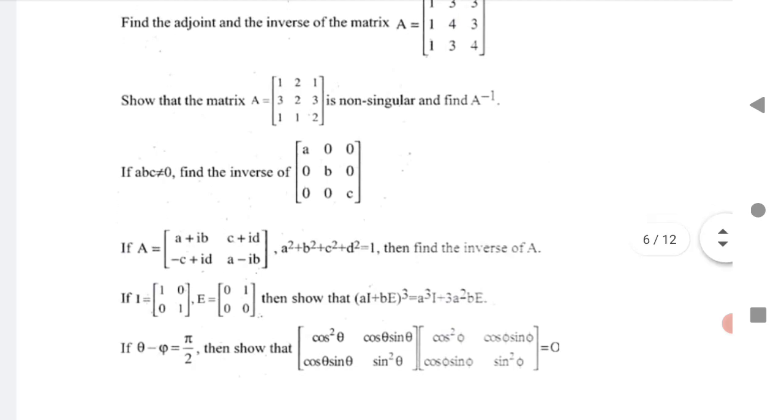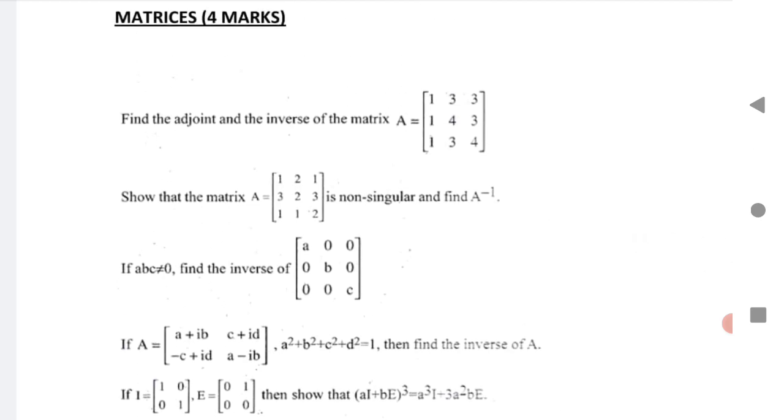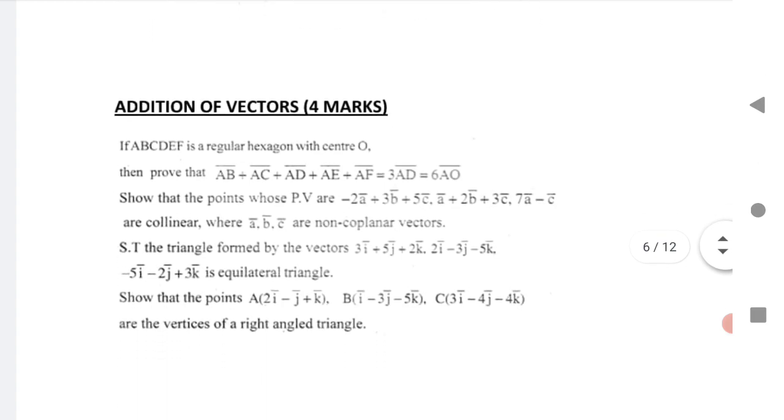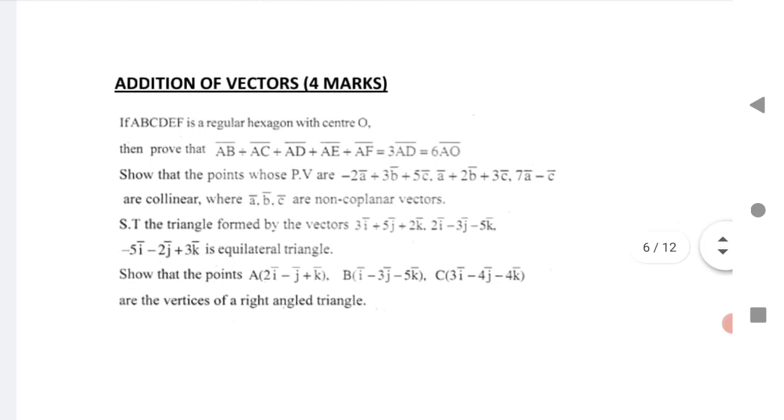Next is addition of vectors, a very important chapter. Addition of vectors is for four marks. ABCDEF is a regular hexagon with center O, then prove that AB equals to 3AD equals to 6AO. Next, show that the points whose position vectors PV are minus 2A plus 3B plus 5C is given are collinear.